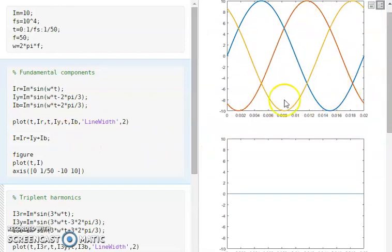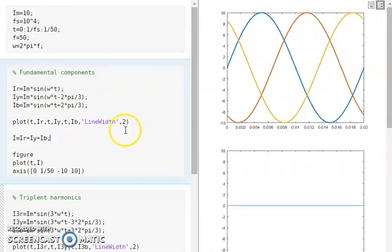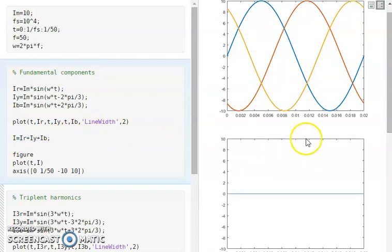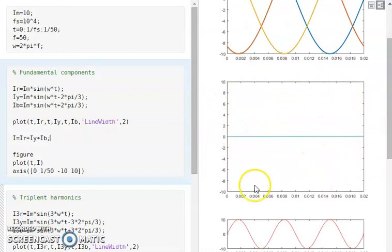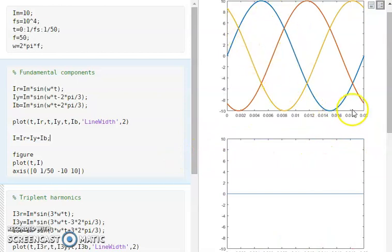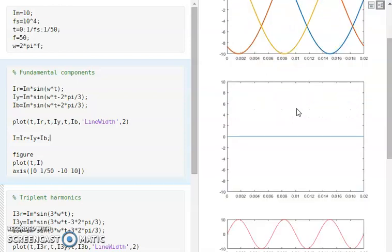This is a complete balanced system. When you add all the three components IR, IY, IB, I plotted the summation of all the three components. Here you can see that the value is zero. That means the perfectly phase displaced currents produce a net current of zero. In a three-phase system, IR + IY + IB represent the neutral current. If the system is completely balanced, the current through the neutral conductor is zero.